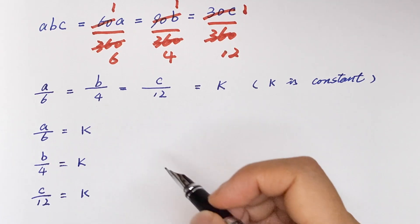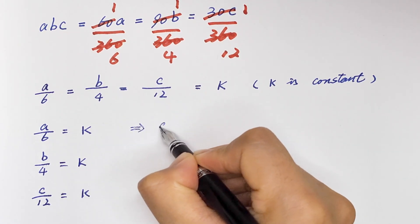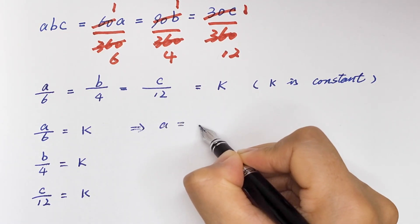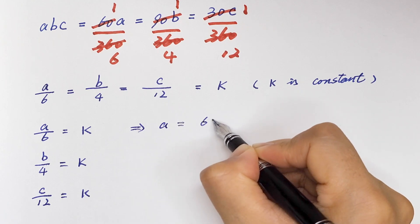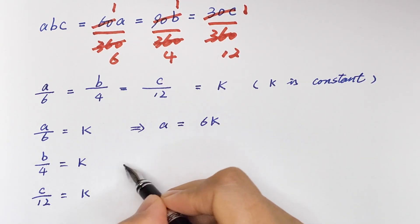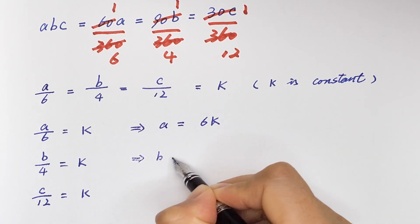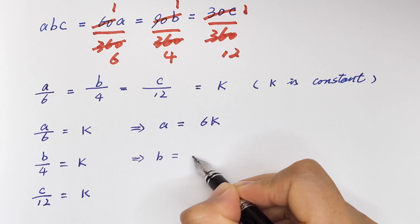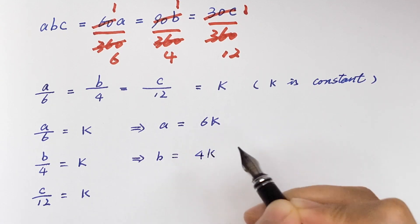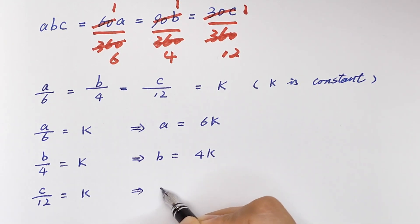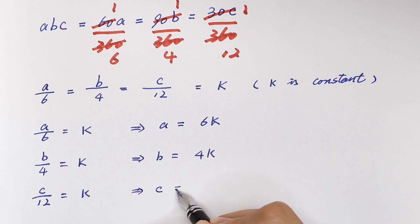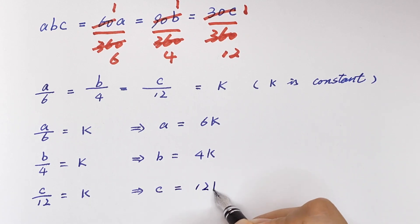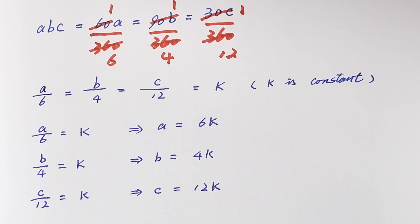Therefore, a is equal to 6k, b is equal to 4k, and c is equal to 12k. We now have the values of a, b, and c expressed in terms of k, which is a constant.